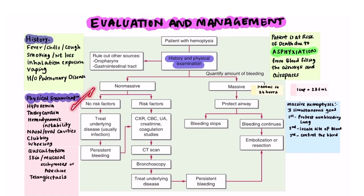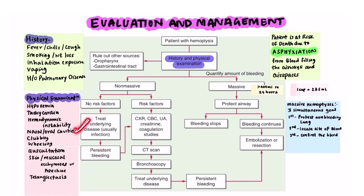If the patient falls in the non-massive category, look for risk factors. If there are no risk factors, the patient likely has an acute disease like infection and we treat that. If risk factors like smoking, weight loss, or inhalational exposure are present, further evaluation is needed: chest X-ray, complete blood count, urinalysis, creatinine, coagulation studies. If these fail to give a clue, we proceed to CT scan and bronchoscopy. Once the cause is identified, treatment begins.